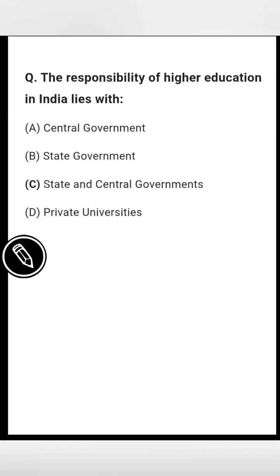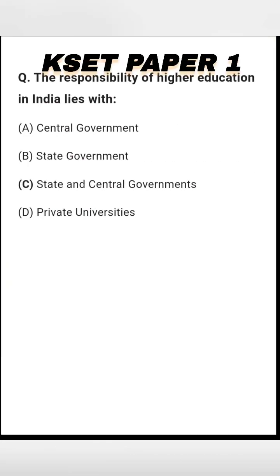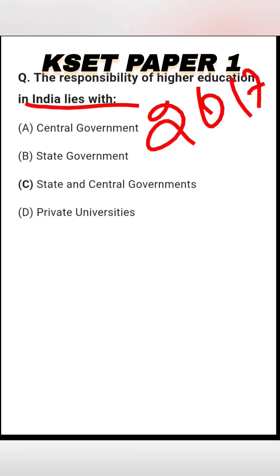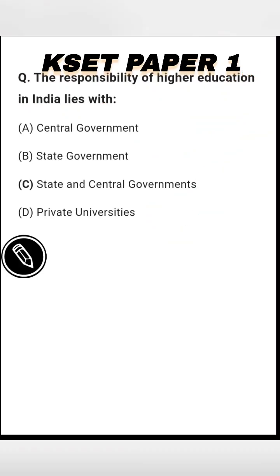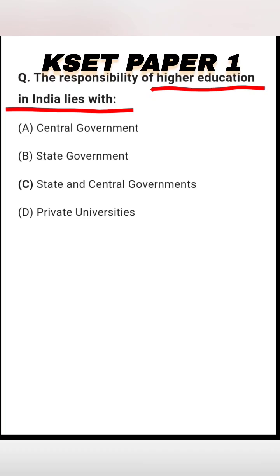The first question: the responsibility of higher education in India lies with — option A: central government, option B: state government, option C: state and central government, option D: private universities. The right answer is option C — state and central government.